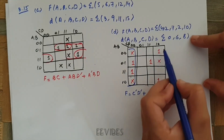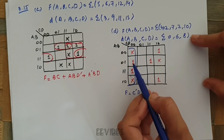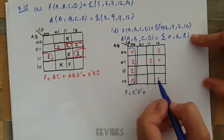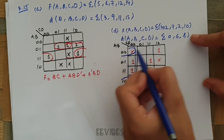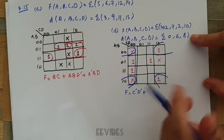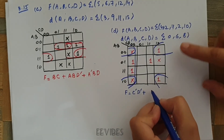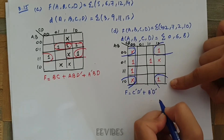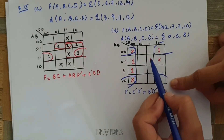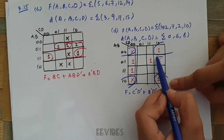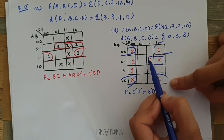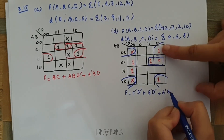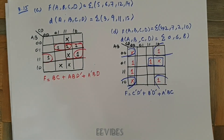Next, I can combine these four corner squares — choosing them over another grouping because they cover two ones — giving the expression B'D'. The last remaining minterm can only be merged with the adjacent don't care condition, giving the expression A'BC. So the simplified expression for part D is F = C'D' + B'D' + A'BC.